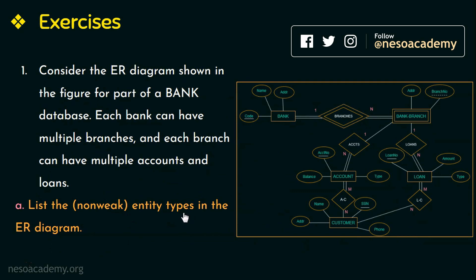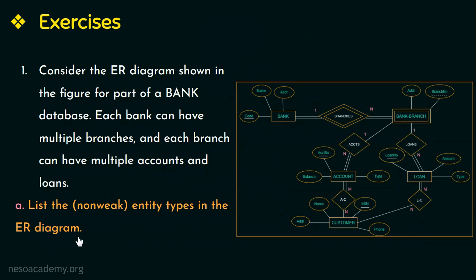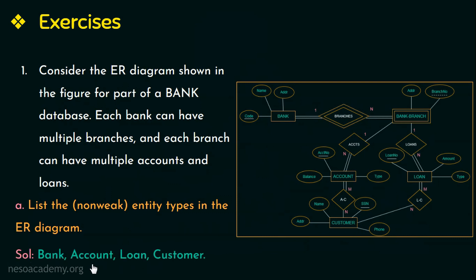As we have already learned in the previous videos, the non-weak, regular, or strong entity types are represented by a rectangle. Based on this figure, the entity types represented by a single rectangle are bank, account, loan, and customer. That is the answer for this question.